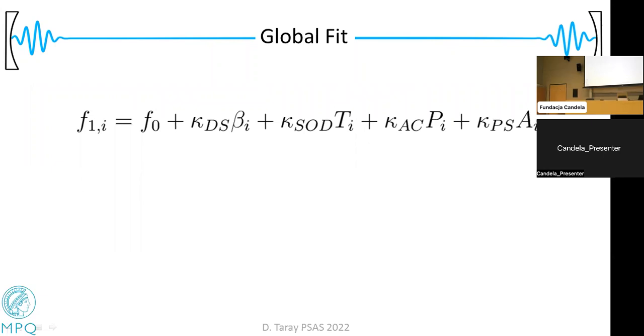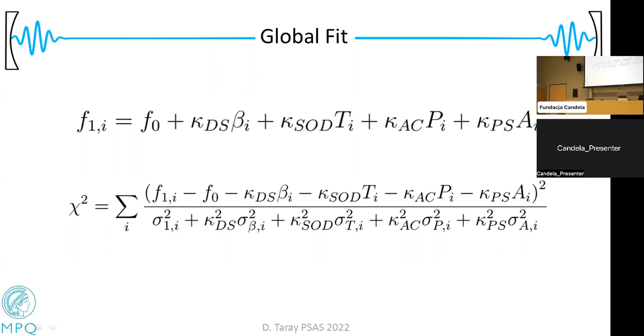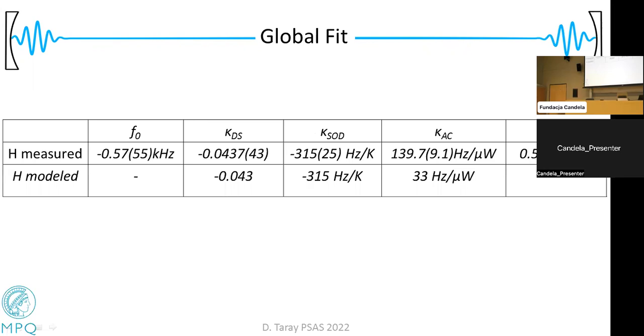We apply this kind of global model. We call it a global fit. We assume that the central frequency that we're measuring depends linearly on all of these parameters. Then we record around 10,000 lines and globally fit these parameters by minimizing chi-squared, and we get all of these different linear coefficients. We don't rely solely on this global fit, but we also build theoretical models and run simulations to get estimates on these parameters. As you can see, they agreed quite well for CIRFODS and for the second-order Doppler shift, but somehow for the AC Stark shift in the hydrogen measurement, there is a factor of four discrepancy. This was kind of the largest uncertainty in the hydrogen measurement.